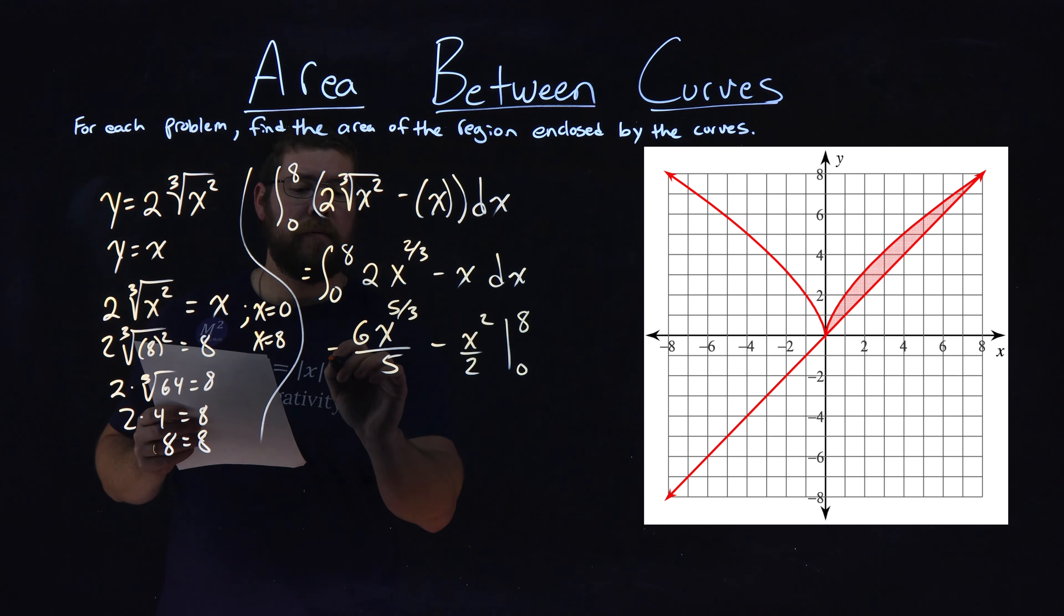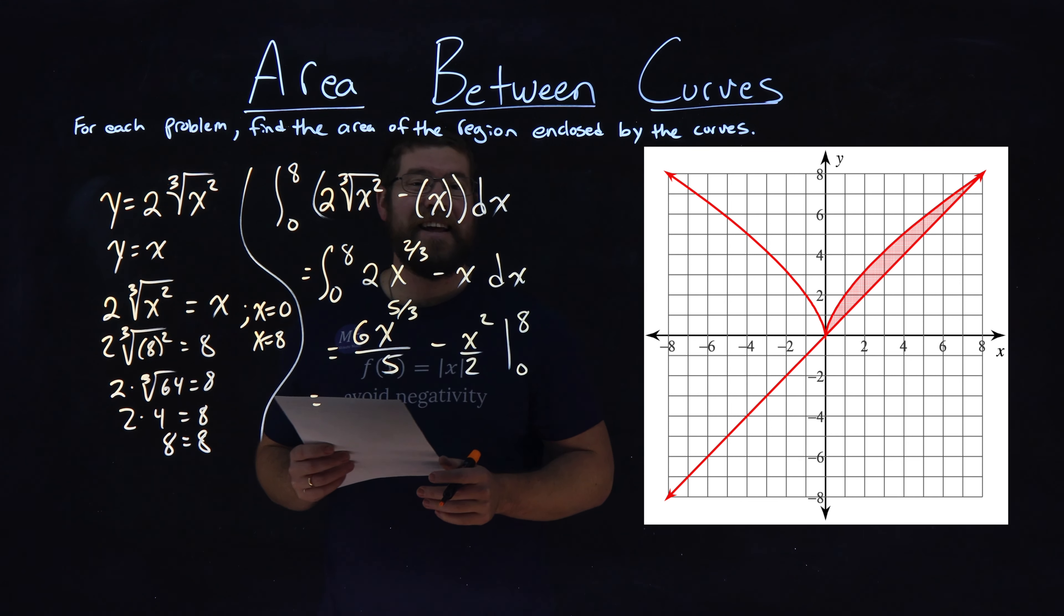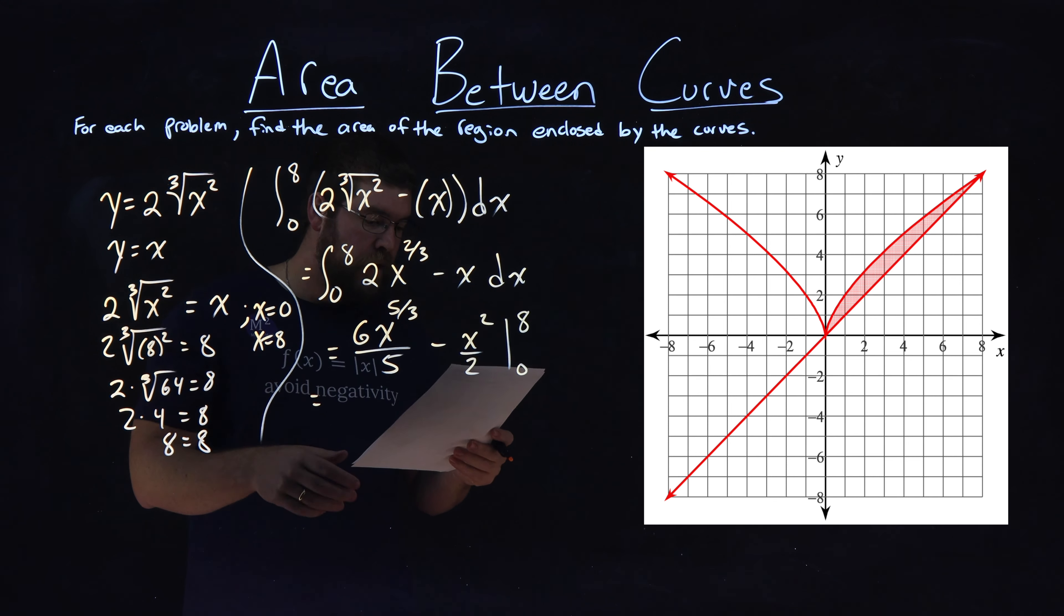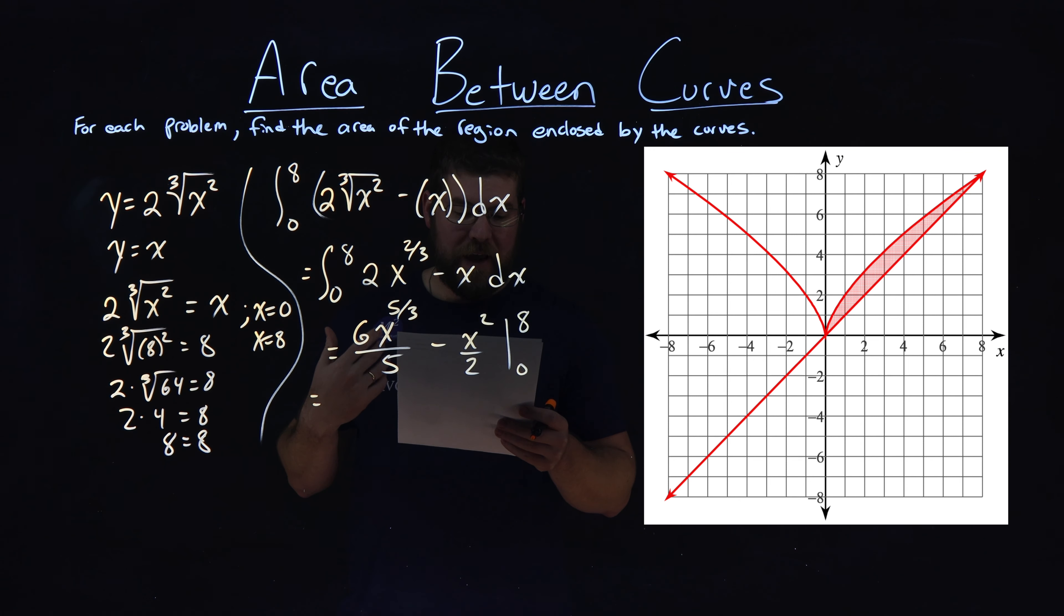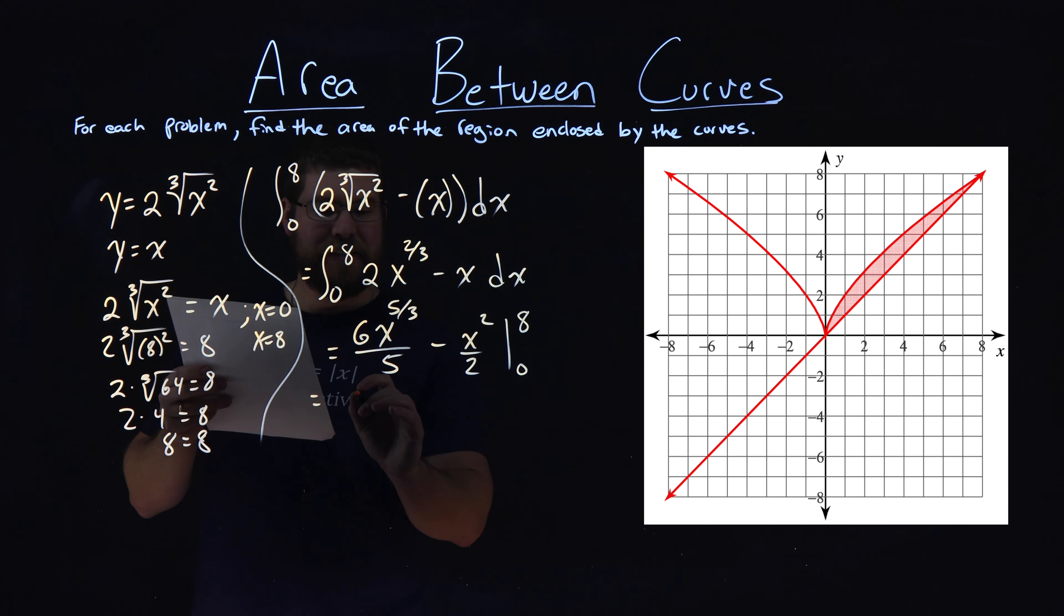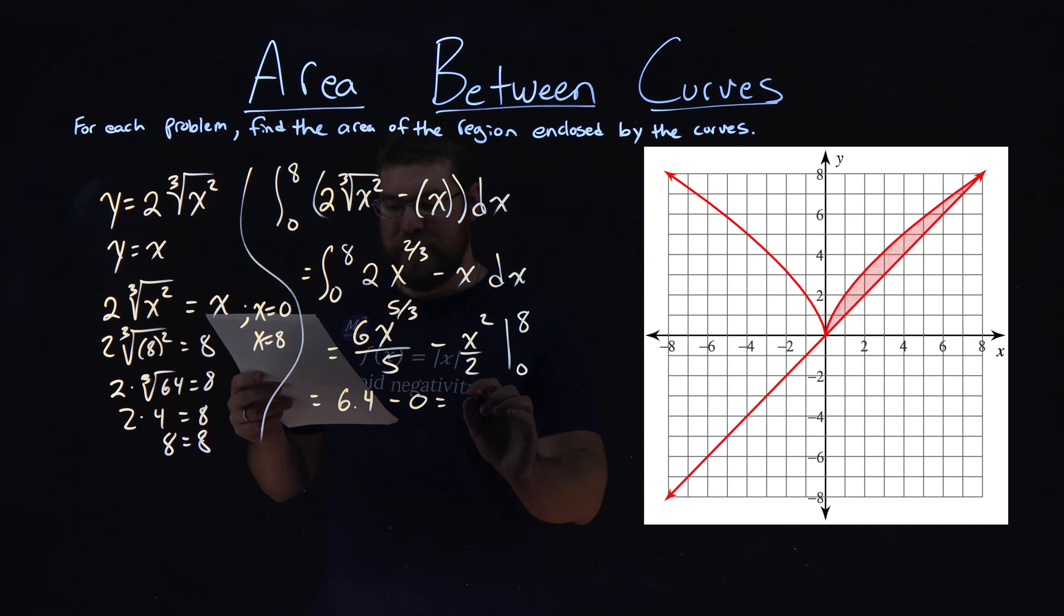So now from here, we first plug in 8 for x and simplify. When we plug 8 in for x and simplify, we get 6.4. And then we plug 0 in for x, which gets us 0. And 6.4 minus 0 is 6.4.